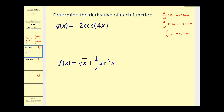We want to find the derivative of g of x equals negative 2 cosine 4x. We have an outer function of cosine and an inner function of 4x. So our u will equal 4x. If you look at this derivative formula, you can see that our u would be 4x.